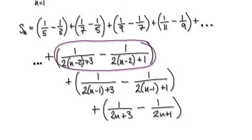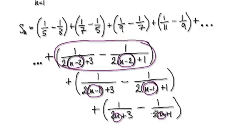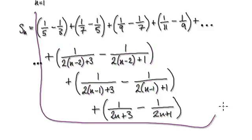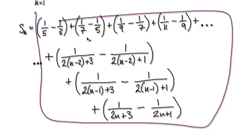The term before that uses n minus 2, and the one before that uses n minus 1. The very last term uses just n, up to the nth term. So Sn subscript n is given by the sum of all these terms written out.